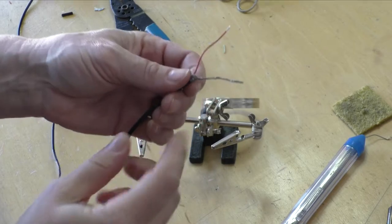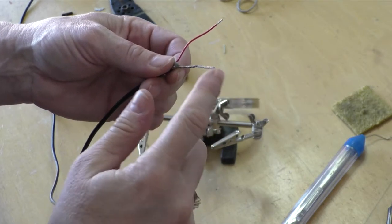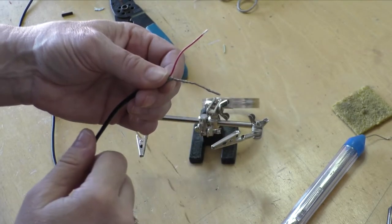It's stripped back enough now. So I'm just going to tin the end of this a little bit so it's easier to solder onto the light.